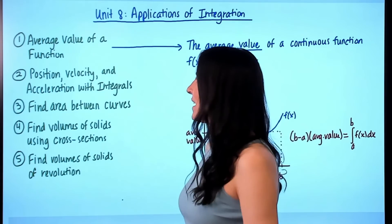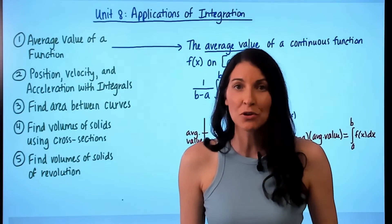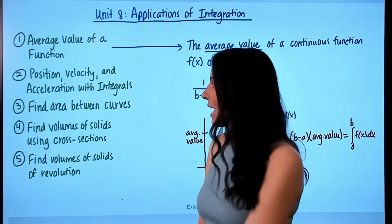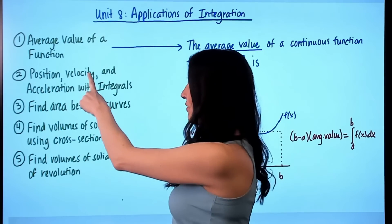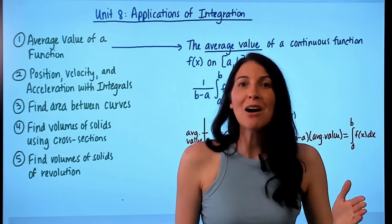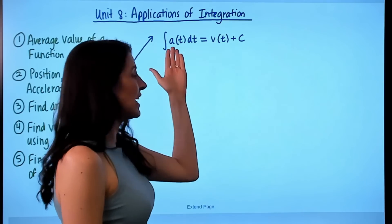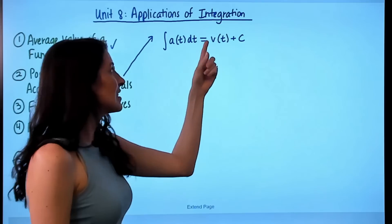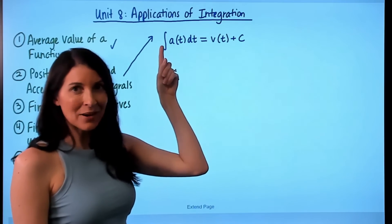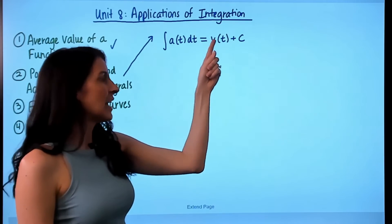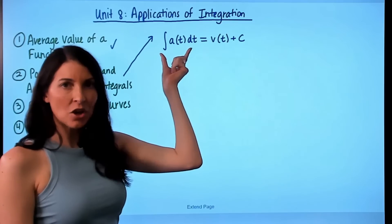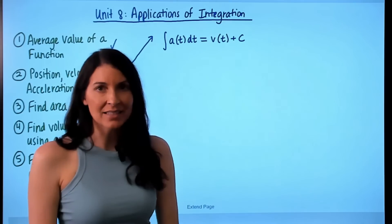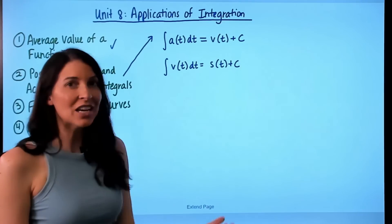Next up is finding position, velocity, and acceleration with integrals. We've already established that the derivative of position gives velocity, and the derivative of velocity is acceleration. Now, working backwards: if you are given acceleration and want to find velocity or position, you take the integral. Since the derivative of velocity is acceleration, the integral of acceleration is velocity. You'd be given the acceleration equation and a velocity at a specific time to solve for the constant.